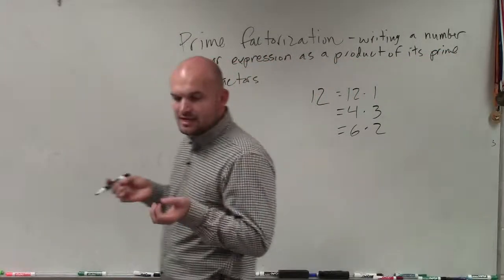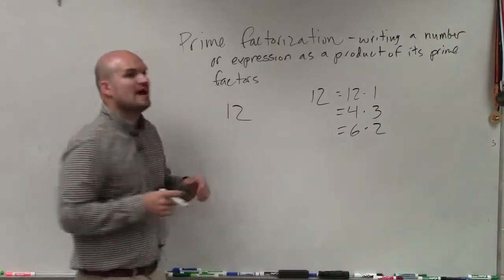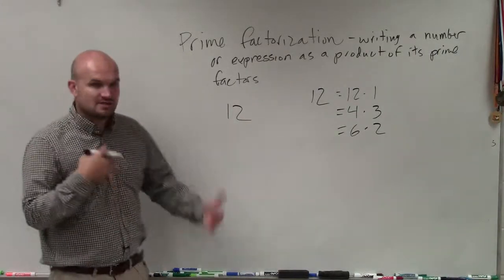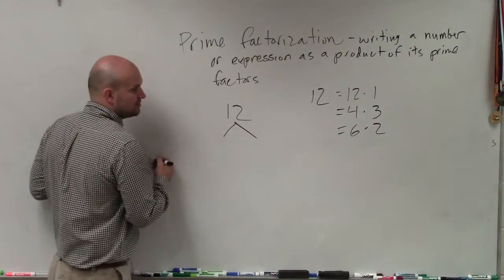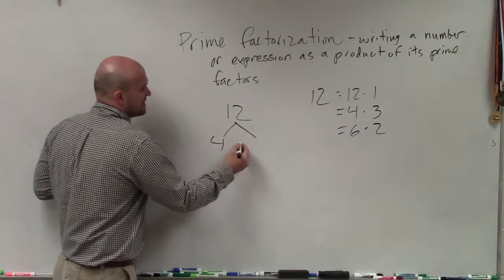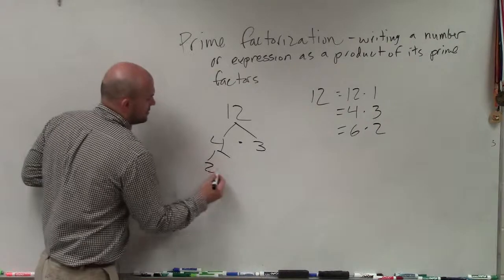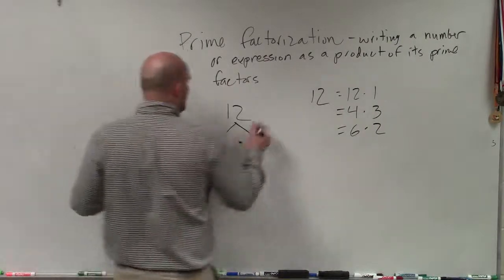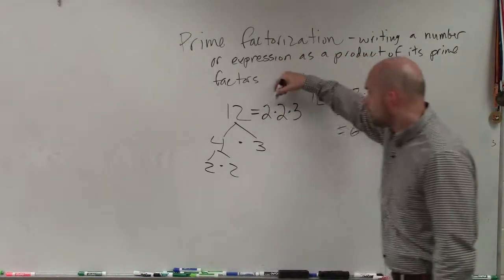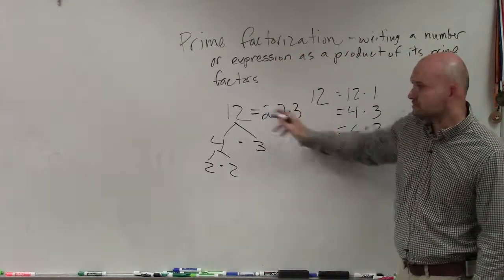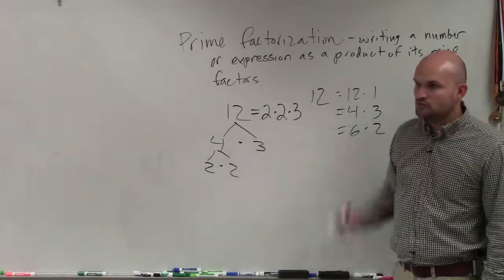So to rewrite 12 as a product of its primes, what we do is we create our factor tree. There's multiple different ways to do this. Basically what you can do is factor 12, and let's say we do 4 times 3. Then can I factor down 4 further? Of course I can. 2 times 2. So therefore, the prime factorization of 12 is 2 times 2 times 3. These are all prime numbers. And does 2 times 2 times 3 give us 12? Yes. So that is the prime factorization of 12.